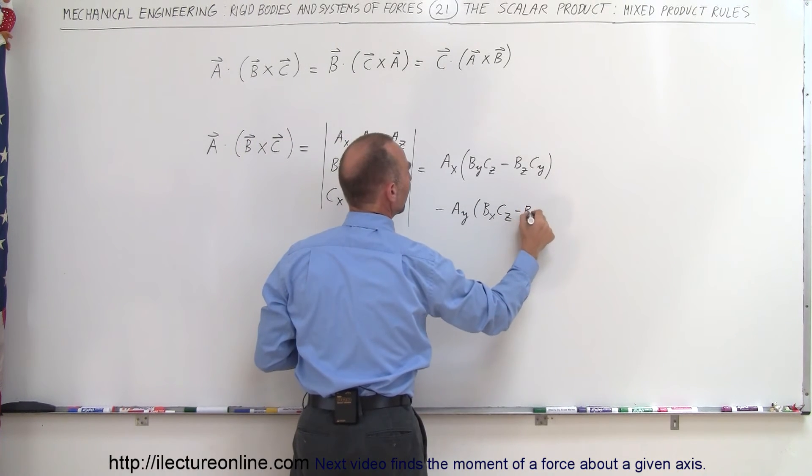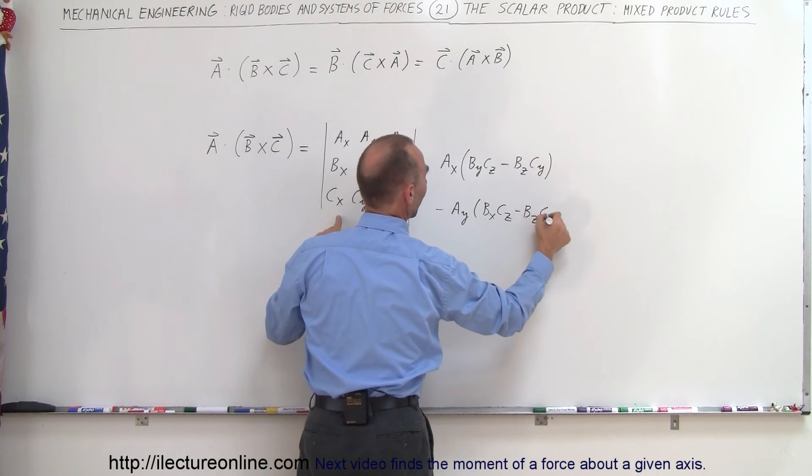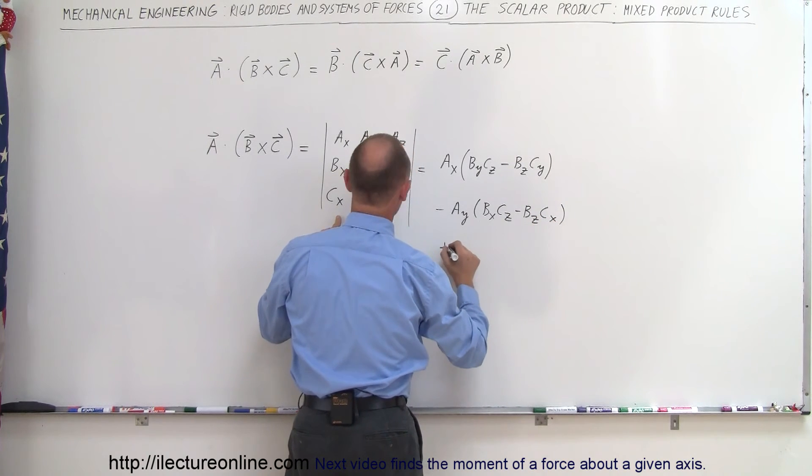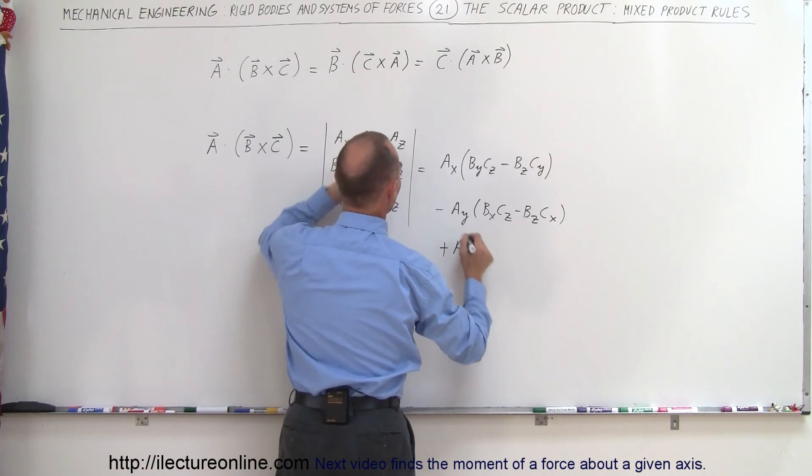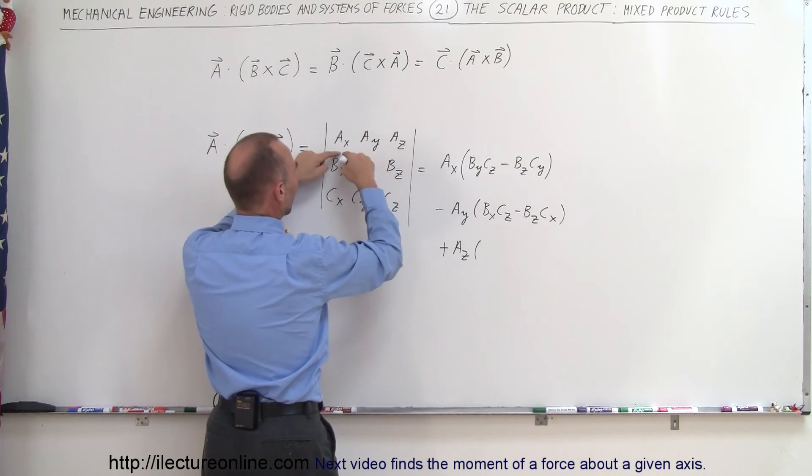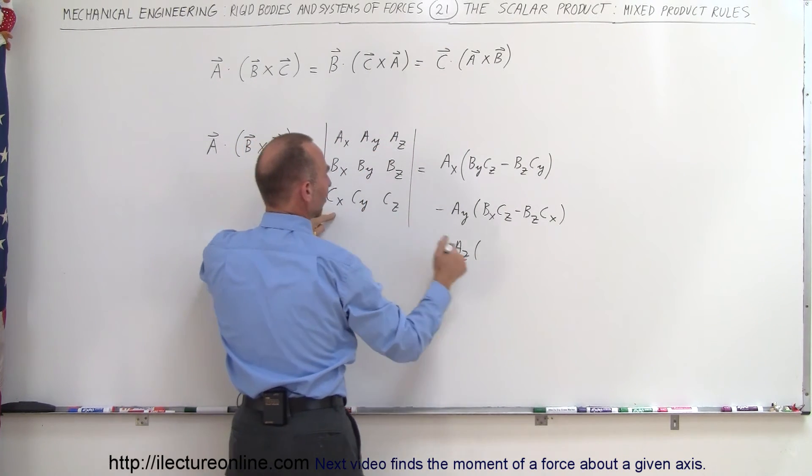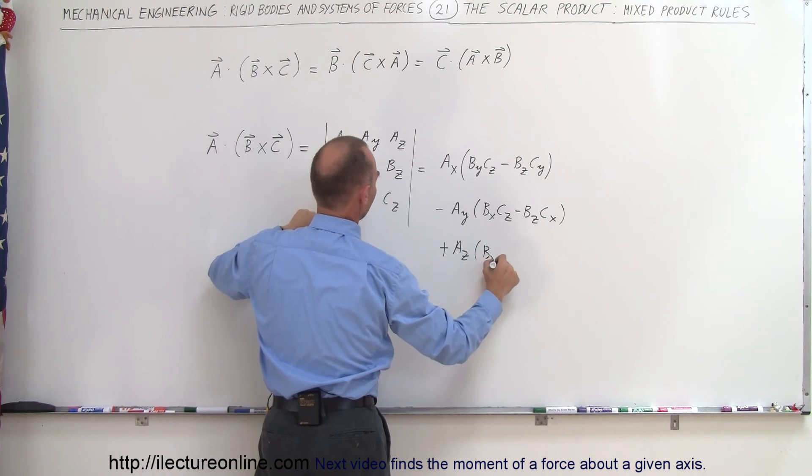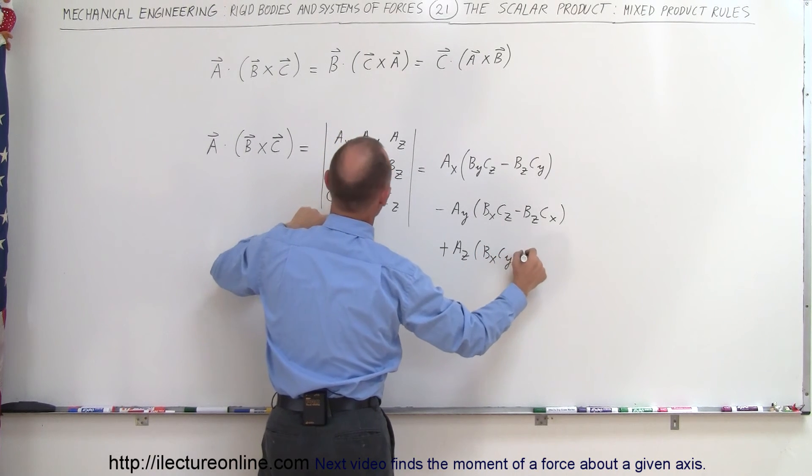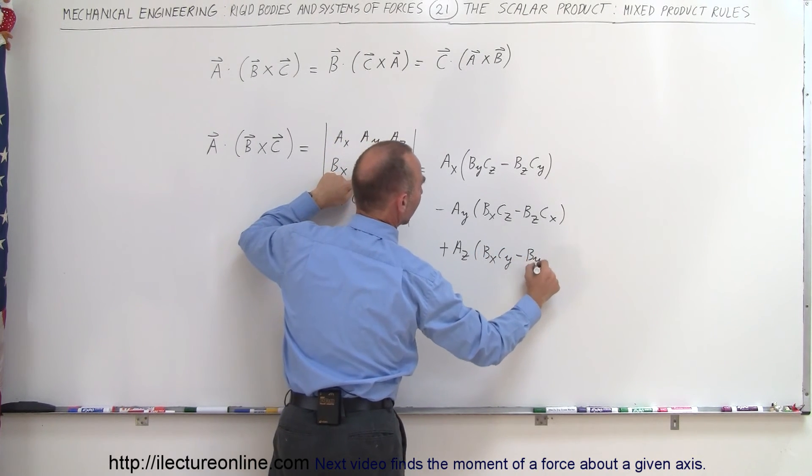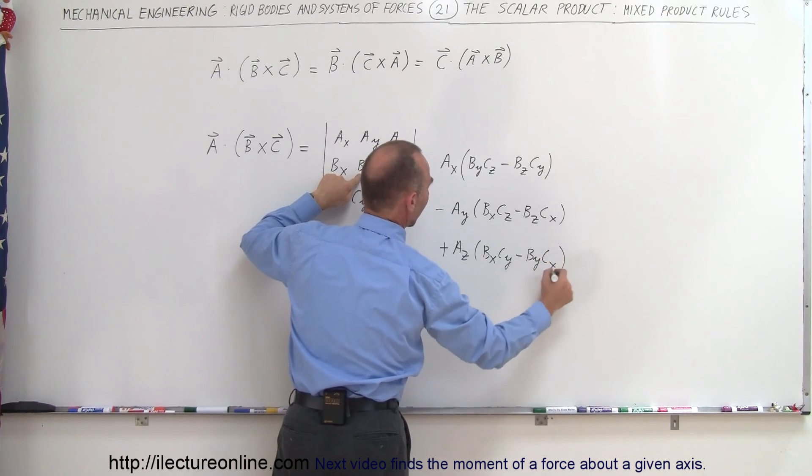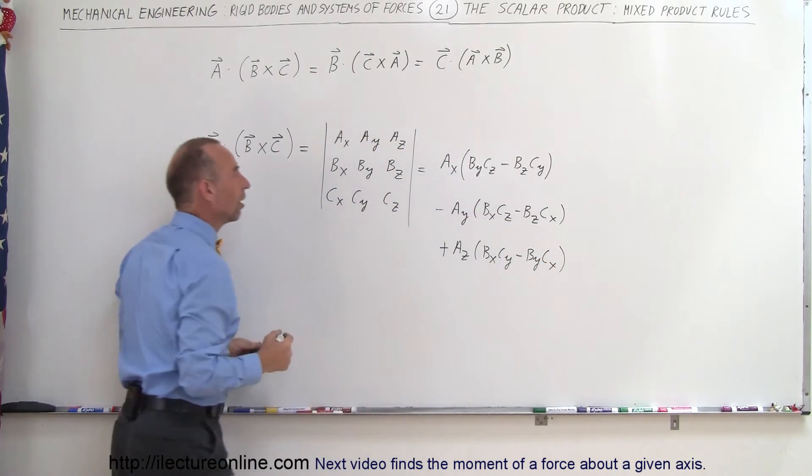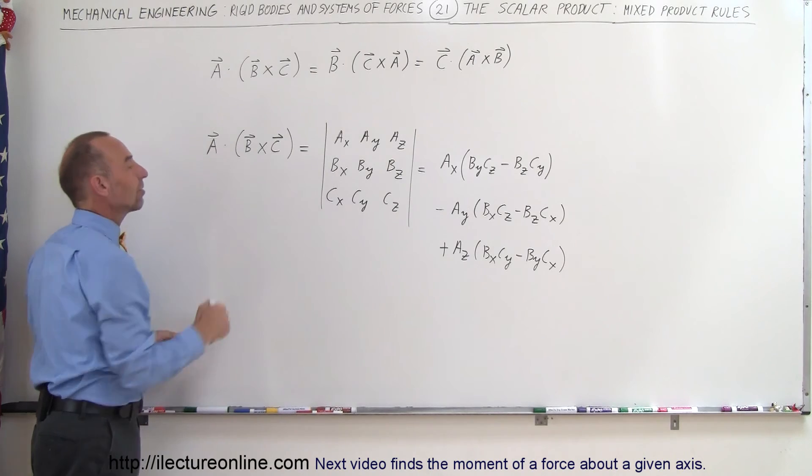So minus B sub Z C sub X and then plus we get A sub Z. And again, if you cross out this column, this row, you get these four elements left. So you get B sub X, C sub Y minus B sub Y, C sub X. And that will be the result of doing A dot B cross C.